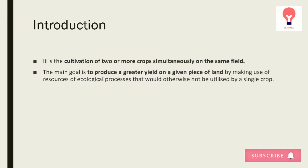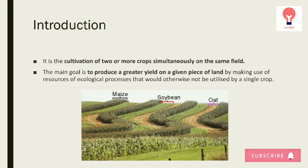Welcome to Learner's Top. This is Samiksa, and in this video I will discuss intercropping. Its definition: it is the cultivation of two or more crops done at the same time on the same field. The main goal is to produce a greater yield on a given piece of land by making use of resources and ecological processes that would otherwise not be utilized by a single crop.